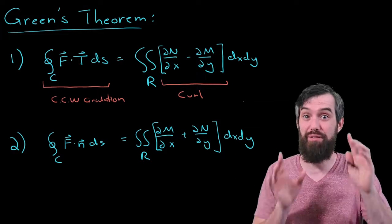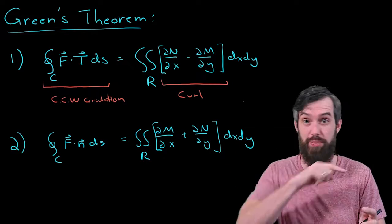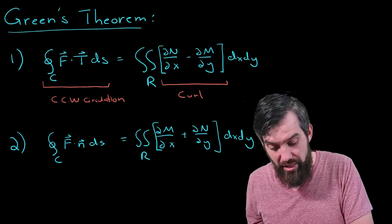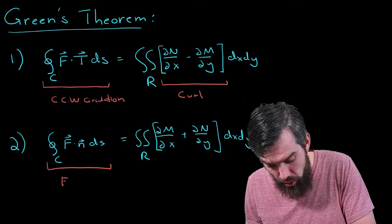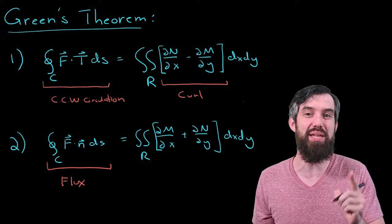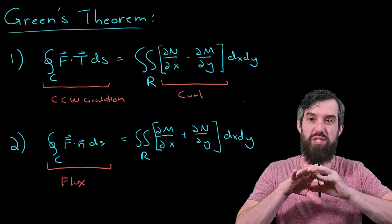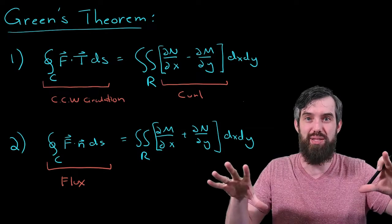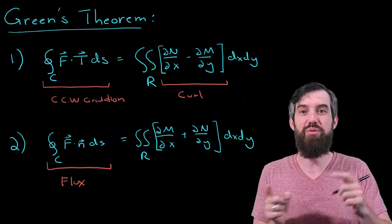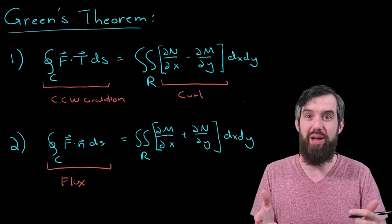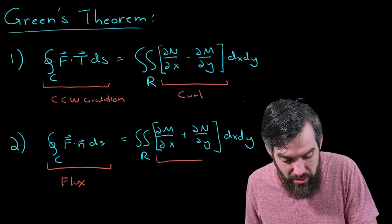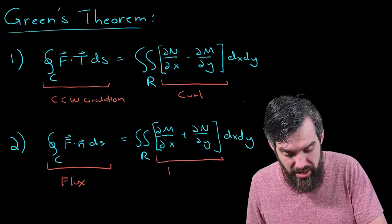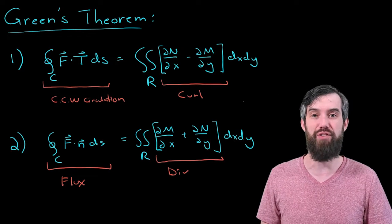Now, the second part of the theorem is very similar. It also relates a property along a boundary. It's just that this property now is referred to as the flux. So the flux is a measure of the degree to which the vector field spreads outward across the boundary. And then Green's Theorem is saying that that can be equated with a double integral over the enclosed region of an integrand, and this time referred to the integrand as the divergence.